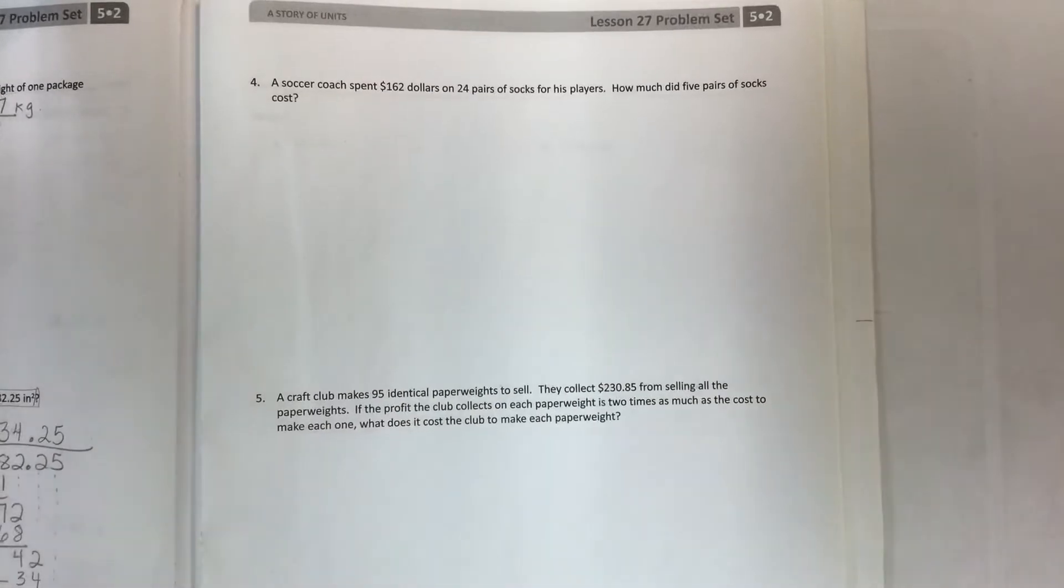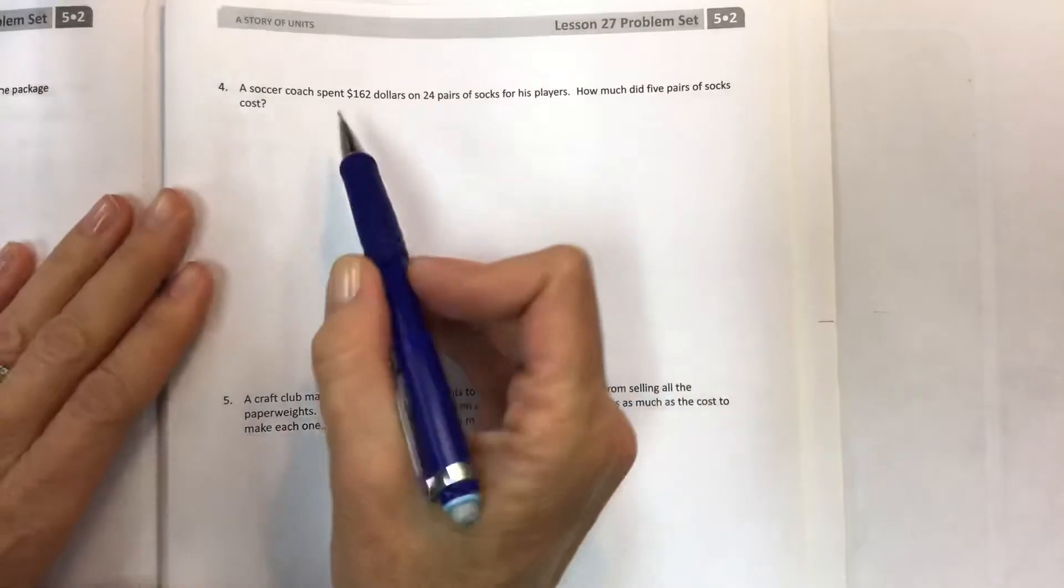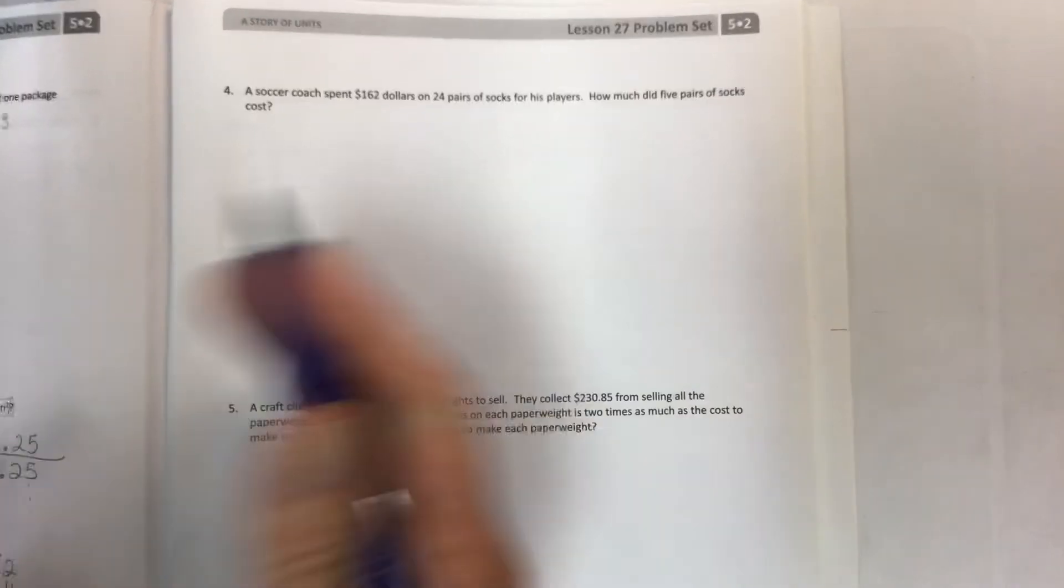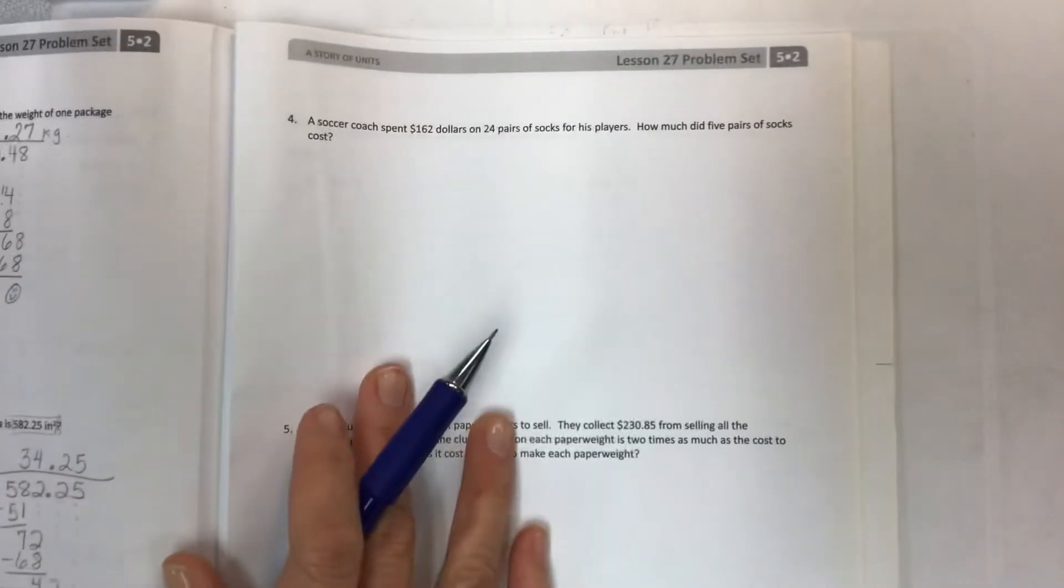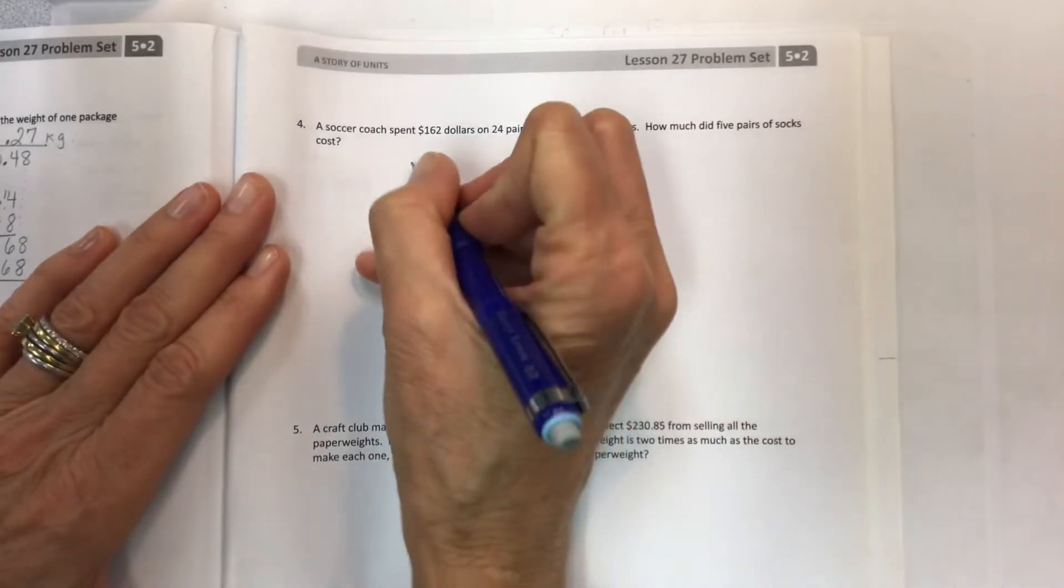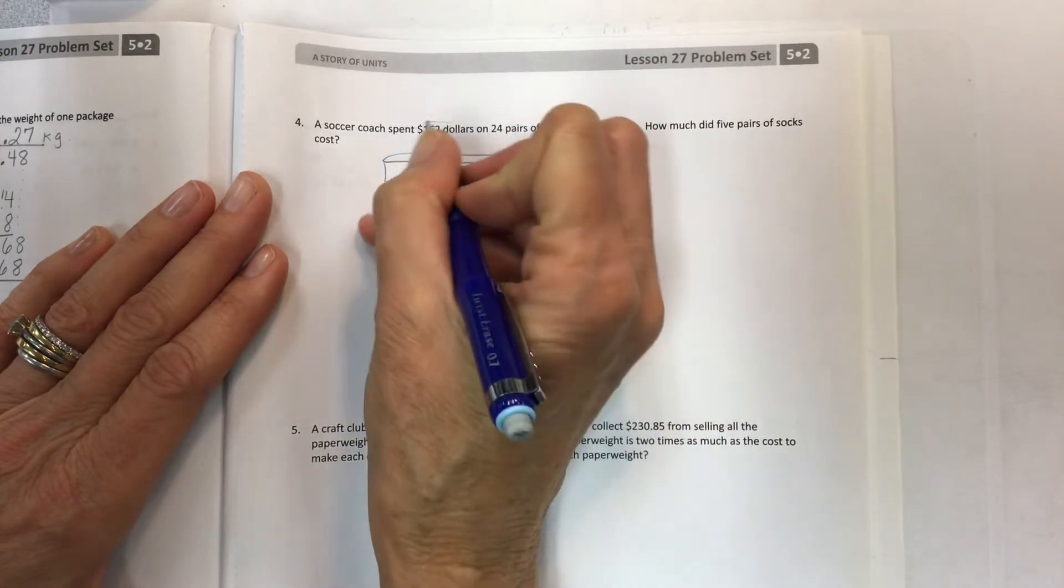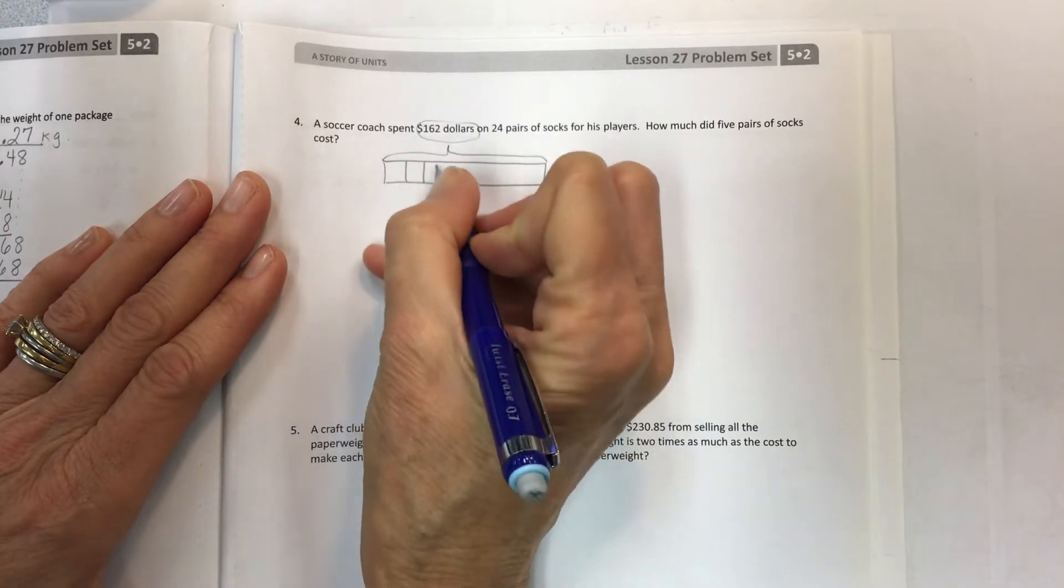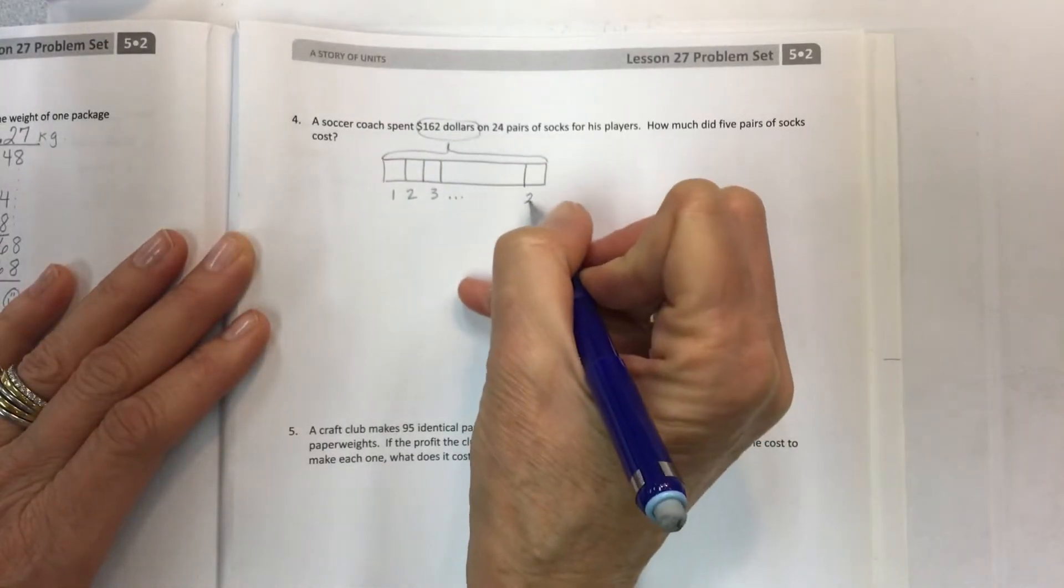A soccer coach spent 162 dollars on 24 pairs of socks for his players. Kind of like the previous tape diagram with the total at the top and it's in 24 sections. How much did five pairs cost? So you have the 162 dollars on 24 pairs. One, two, three, one, two, three, dot dot dot down here up to 24.